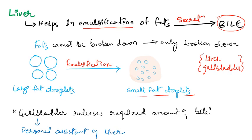If there is a problem in your liver, or if the gallbladder is removed for some reason, the person will have trouble digesting oily foods, because oily food contains fats. These fats are digested with the help of bile, and bile is produced by the liver and gallbladder.